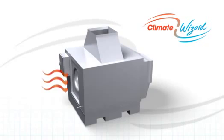Climate Wizard works by drawing in hot outside air and passing it through a series of wet and dry channels. This allows natural evaporation to cool the air.